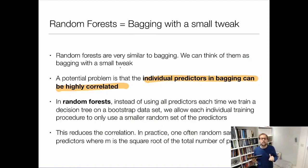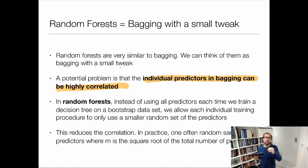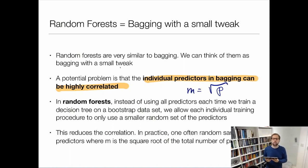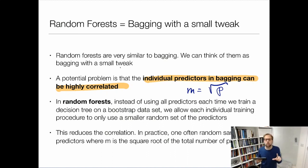This is the key idea. Each time I do a bootstrap, I also take only a random fraction of the predictors and use only that reduced number to construct the tree. A good number to choose is the square root of the total number of predictors p — so I take sqrt(p) predictors. For example, with four predictors, each bootstrap would randomly choose two of those four and only use those two.